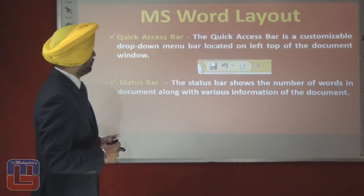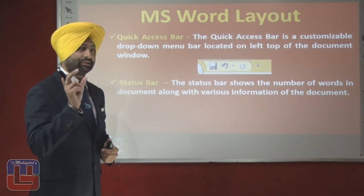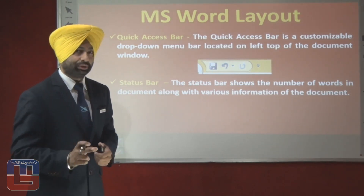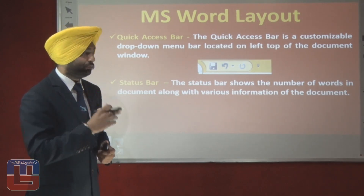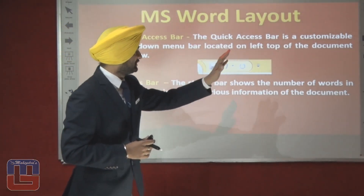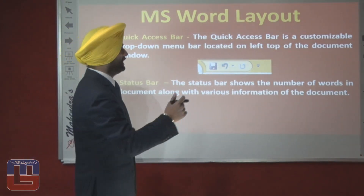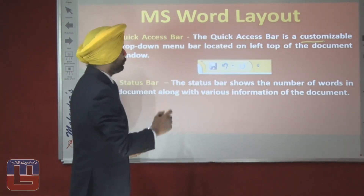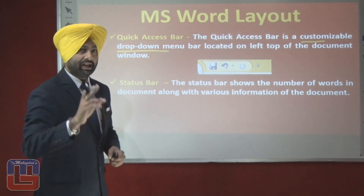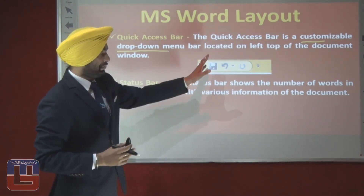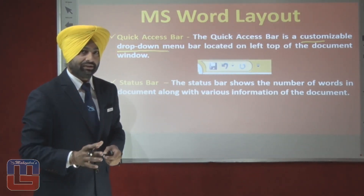Next we have the Quick Access Bar. This is a customizable bar located very next to the office button. The Quick Access Bar is a customizable drop-down menu bar. Two key points to remember: first, it is customizable; second, it is a drop-down menu bar located on the top left of the document, just next to the office button.